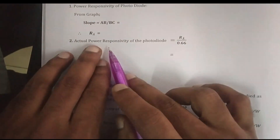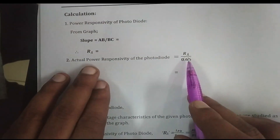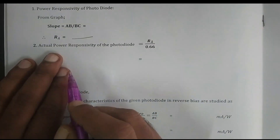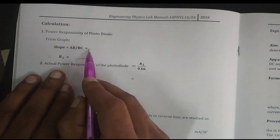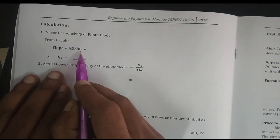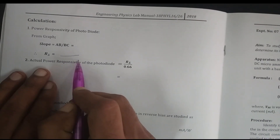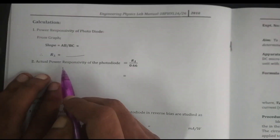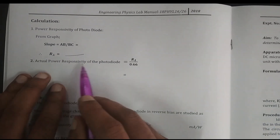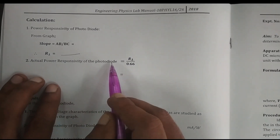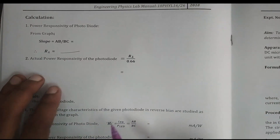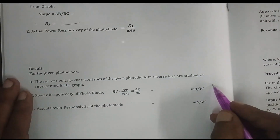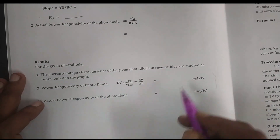Next, calculate the actual power responsivity. From the graph, find R_lambda using the AB and BC slope values. Once you find the R_lambda value, calculate the actual power responsivity using the formula R_lambda divided by 0.66. Note down the results.